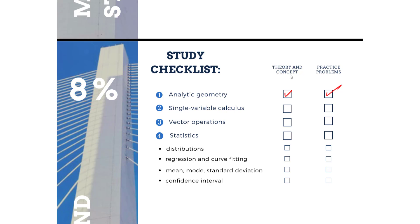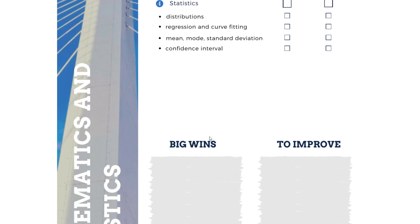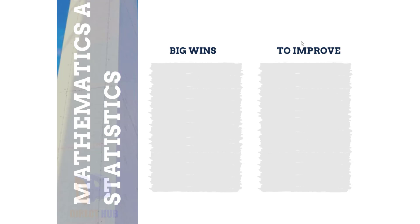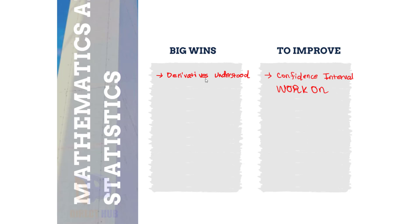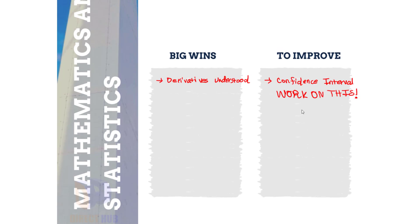You can also check these off for the theory and concept and cover plenty of practice questions. At the bottom is a big wins and areas to improve section. For big wins, you might write an area you felt comfortable with — for example, 'derivatives are understood,' so you do not have to go back to that. For areas to improve, you write things you want to work on further, like if you have no idea what happened with the confidence intervals section and you're completely lost, you would note that you need to work on it and can come back to it.